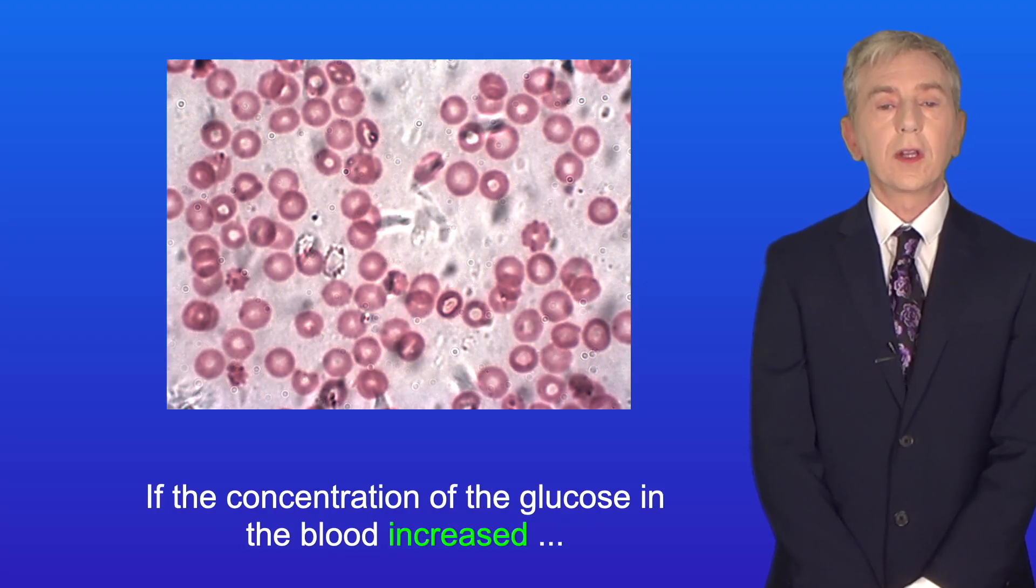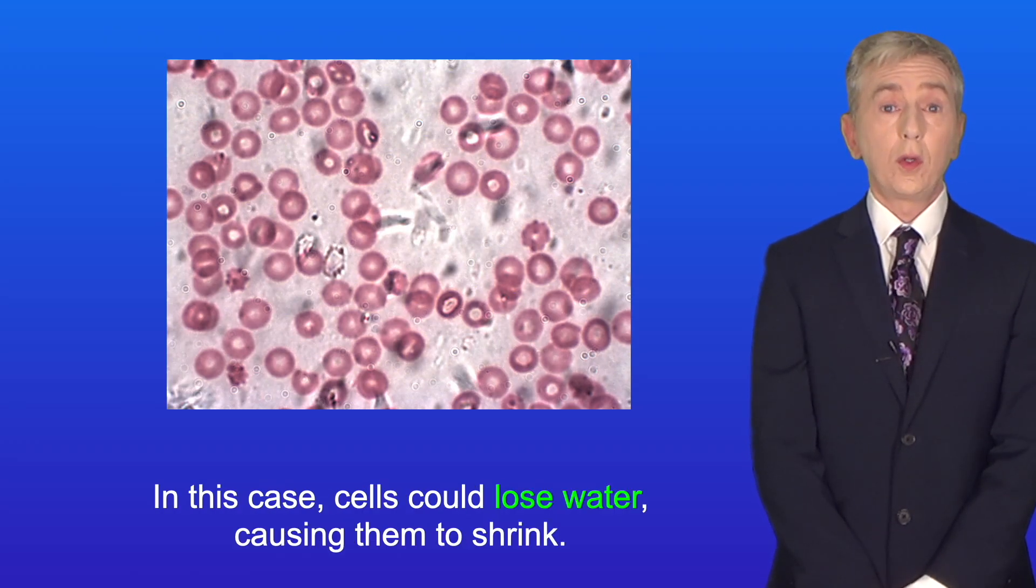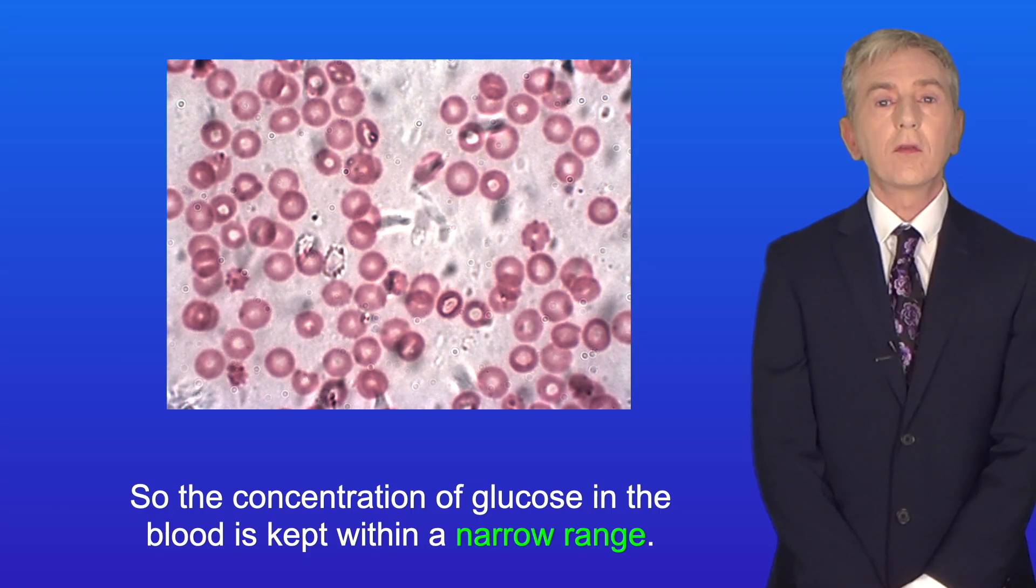If the concentration of glucose in the blood increased, then the water potential of the blood would fall. And in this case, cells could lose water, causing them to shrink. So the concentration of glucose in the blood is kept within a narrow range.